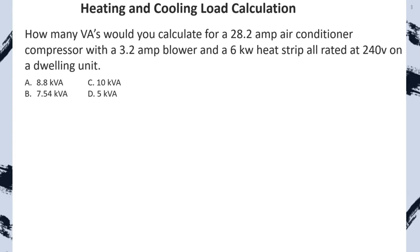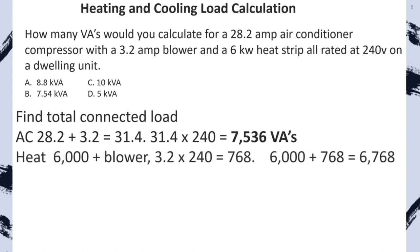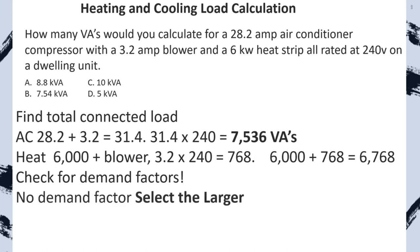Practice problem: How many VAs for a 28.2-amp air conditioner compressor with a 3.2-amp blower motor and a 6 KW heat strip, all rated 240V, on a dwelling unit? Total connected load for AC: 28.2 plus 3.2 equals 31.4 amps multiplied by 240V equals 7,536 VAs. For heat: 6,000 VA plus the blower motor (3.2 amps multiplied by 240V equals 768 VAs) totaling 6,768. Check for demand factors: none. Select the larger — the cooling at 7,536. Great job.